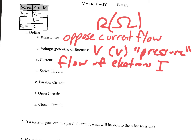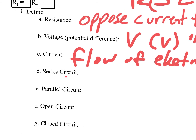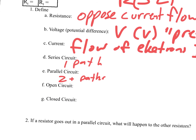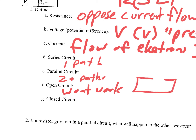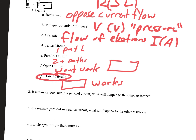A series circuit has one path; a parallel circuit has two or more paths. An open circuit won't work — something is missing or not connected, creating a gap. A closed circuit is connected all the way around, so electricity flows. This one works.